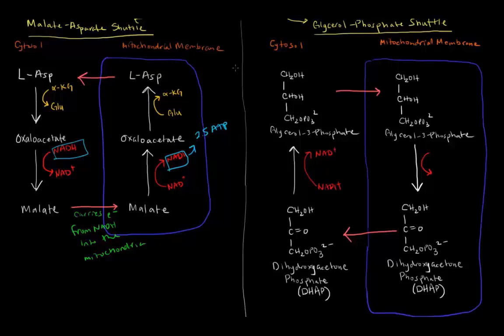Now glycerol 3-phosphate carries those electrons in. Glycerol 3-phosphate can cross the membrane. Once it's inside, it can be oxidized into dihydroxyacetone phosphate and we reduce something. But instead of taking an NAD+ and turning it into NADH, we take an FAD and turn it into FADH2.